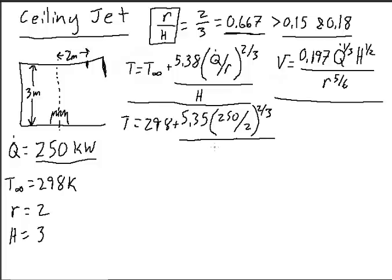So Q divided by H, to the two-thirds power, divided by 3... that gives us a temperature of 342.8 Kelvin.